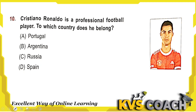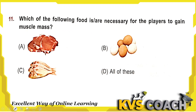Next: Cristiano Ronaldo is a professional football player — to which country does he belong? Cristiano Ronaldo belongs to Portugal. Option C is the right answer. Next question: which of the following food is unnecessary for players to gain muscle mass? Players use body-building food such as chicken, eggs and fish. All of these are body-building foods so players eat all of these. Option D is the right answer.